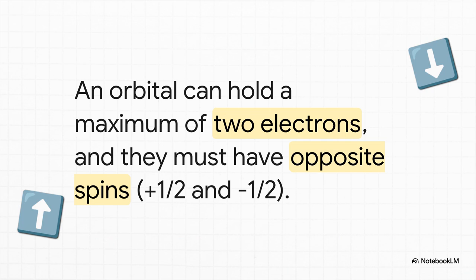So, what does that actually mean? Well, this leads to an incredibly important conclusion. Let's say two electrons are in the same orbital. That means they have the same n, the same l, and the same ml. So, to follow the Pauli rule, they must have different spin values. One has to be spin up, plus one half, and the other has to be spin down, minus one half.